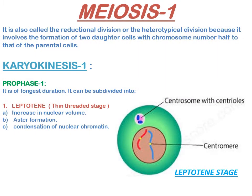Meiosis 1 is also called the reductional division or heterotypical division because it involves the formation of two daughter cells with chromosome number half to that of the parental cell. This can be further divided into karyokinesis 1 and cytokinesis 1. Karyokinesis 1 can be further divided into prophase 1, which includes the leptotene stage, also known as the thin threaded stage.